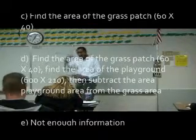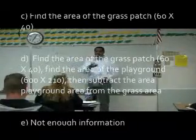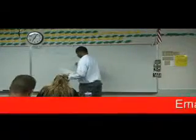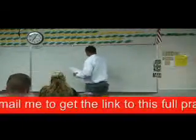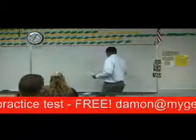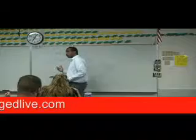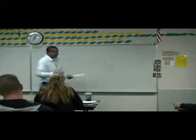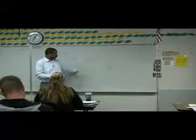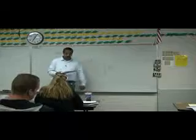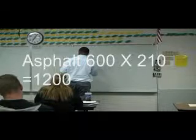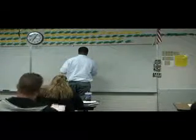Talk me through it, Tina. First you have to find the area of the playground, then find the area of the grass, and subtract the grass from the asphalt. So we've identified the question — how much is the asphalt — and the first step is to find the area of the playground: 600 feet long by 210 feet wide. Then find the area of the grass patch, which is 40 by 60.